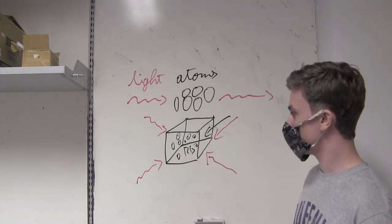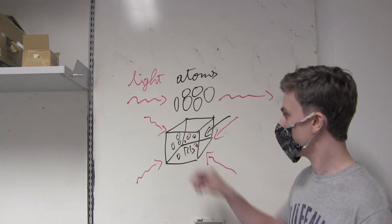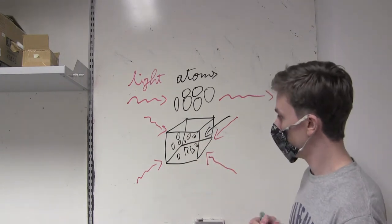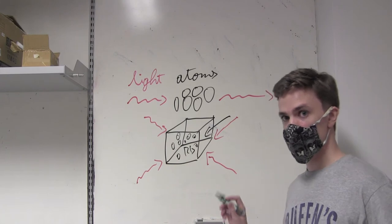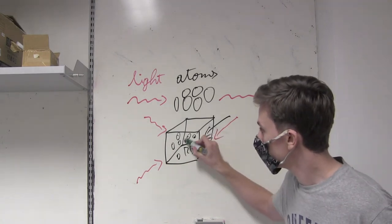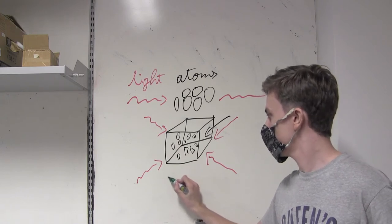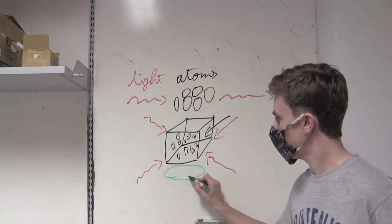And so this will slow down the atoms, but they're still a bit everywhere. So we need to add another element, which is a magnetic field, to create a trapping region just at the center, so that they remain in place. So to do that, we just implement two coils.